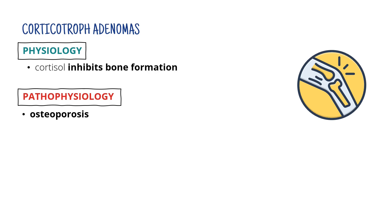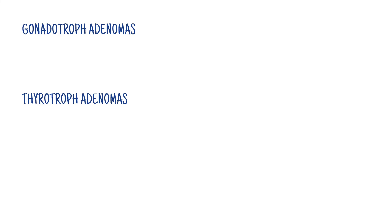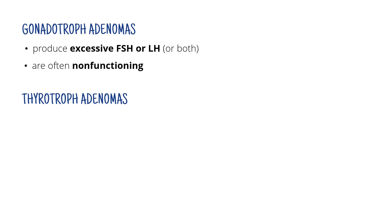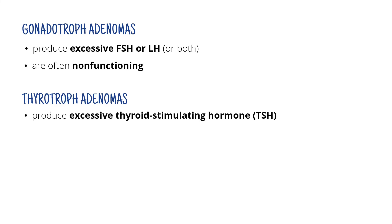Before we finish, a few things about gonadotroph and thyrotroph adenomas, which are very, very rare. Gonadotroph adenomas produce excessive amounts of follicle stimulating hormone or luteinizing hormone, or even both. But they are often non-functioning, and even if they are functional, they usually don't cause any recognizable symptoms. Thyrotroph adenomas produce excessive thyroid stimulating hormone, which stimulates production and secretion of thyroid hormones, so you could theoretically end up with hyperthyroidism — but this is very rare.